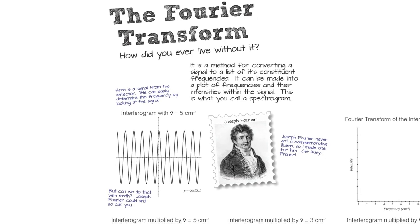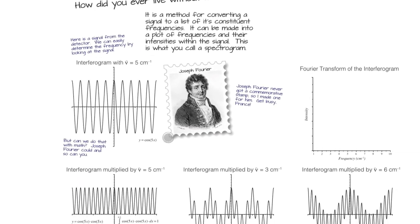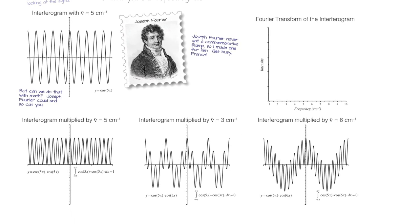So what is the Fourier transform? In its simplest form — and Fourier's math is much more sophisticated than this — in its simplest form, all you have to do is multiply an unknown signal by a test frequency. If you multiply a signal of five per centimeter by the exact same signal, five per centimeter, let's do this.